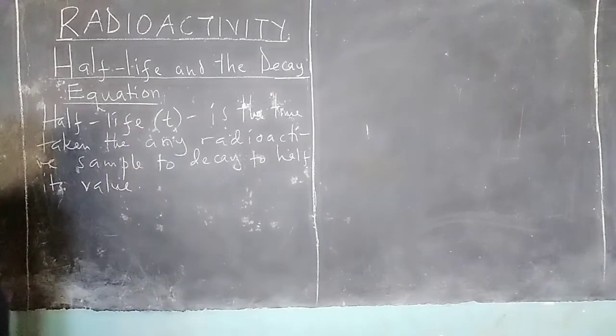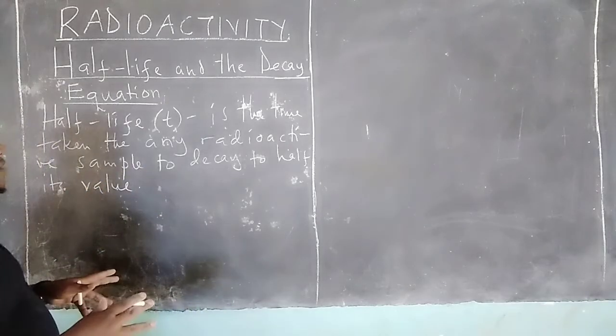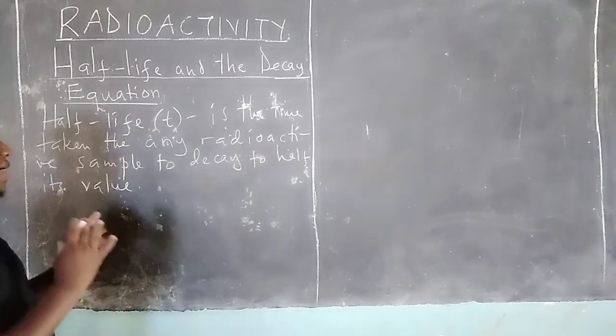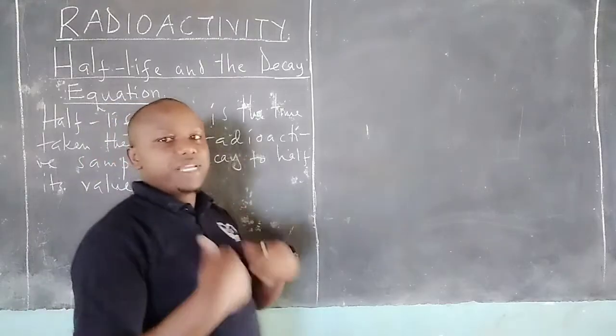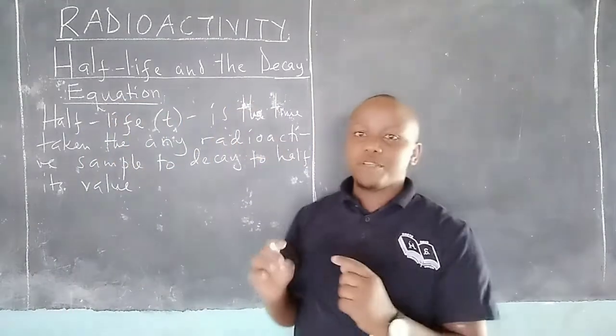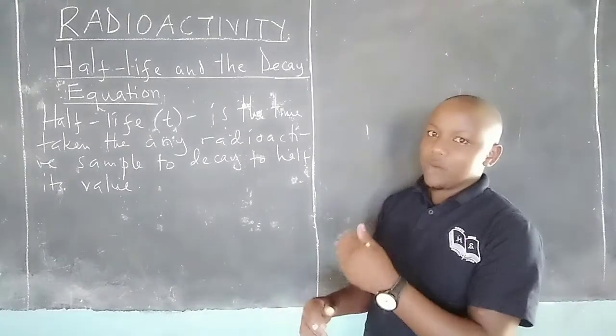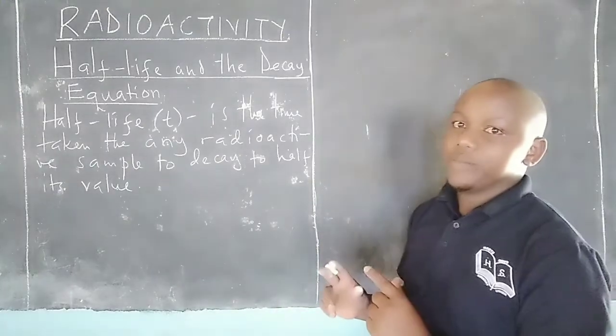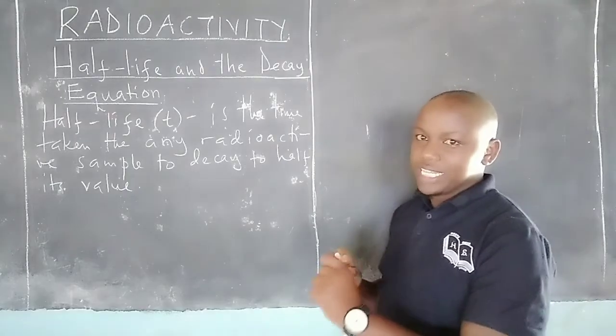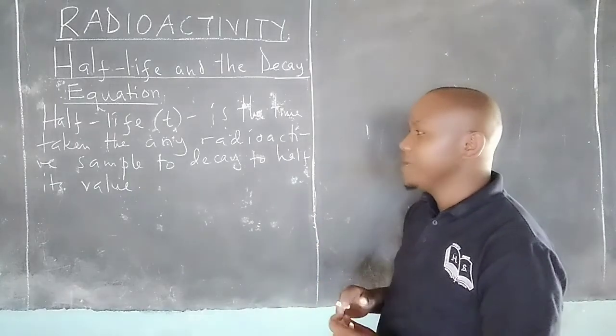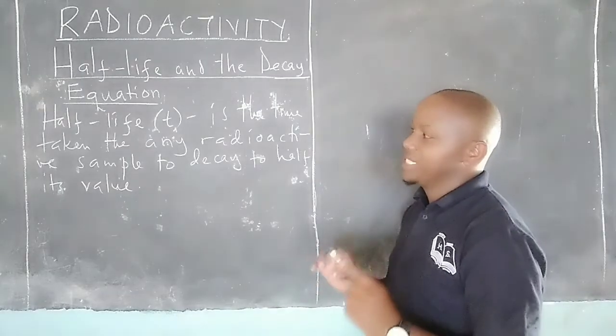Therefore, if we have a certain mass and it is disintegrating, the time it will take to become half of the mass it begins, we say that time is called half-life. If we have a given number of atoms which are disintegrating, the time they will take to disintegrate until they have half the number they started, that time is the half-life of the given sample.